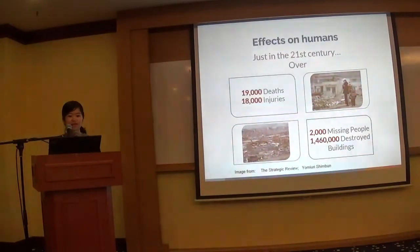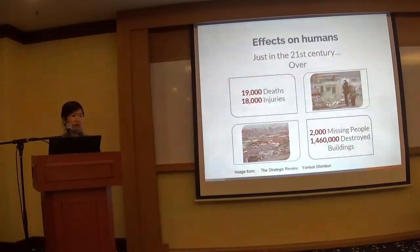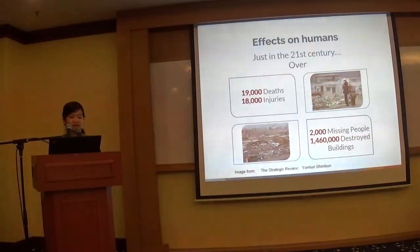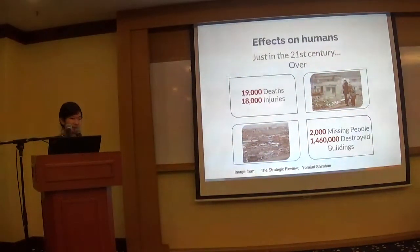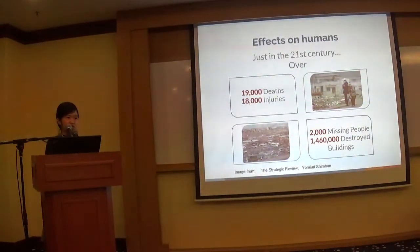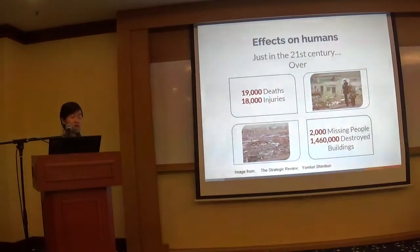Earthquakes have a big effect on humans. Just in the 21st century, over 19,000 people have passed away, over 18,000 people got injured, over 2,000 people are missing, and over 1,460,000 buildings got destroyed just in Japan in the past 17 years.